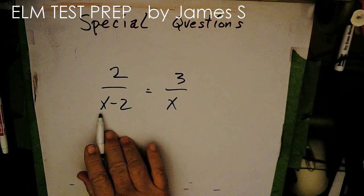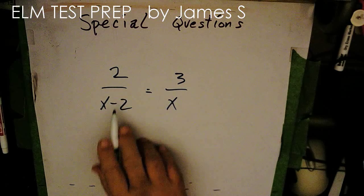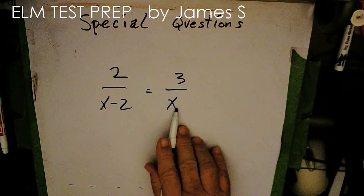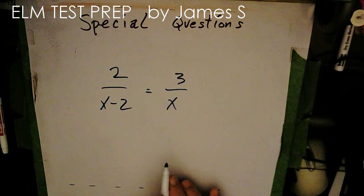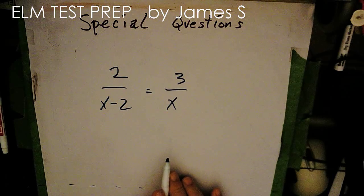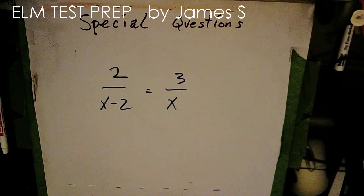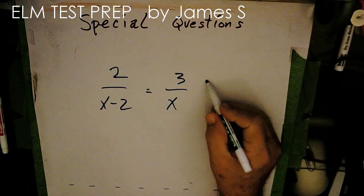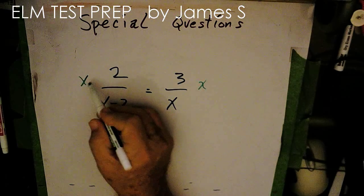Well, if this were 4, and I took away 2, that would be 2 over 2. And if this is 4, that would be 3 over 4, and so 1 would not equal 3 fourths. But let's see what we do. Let's multiply this side by x and this side by x.